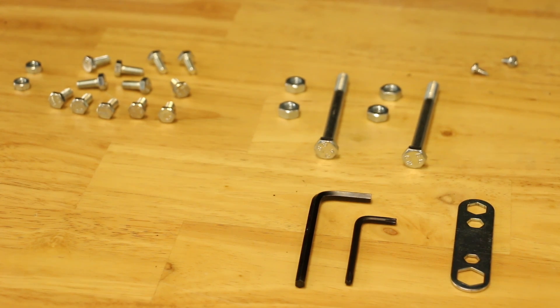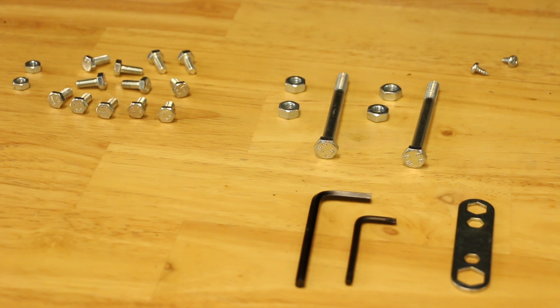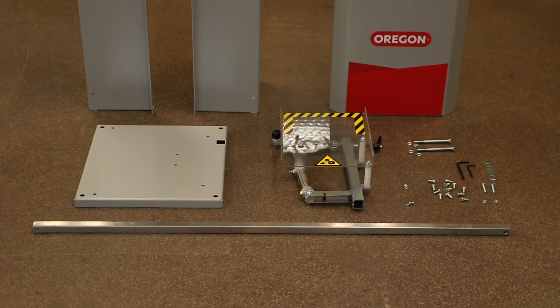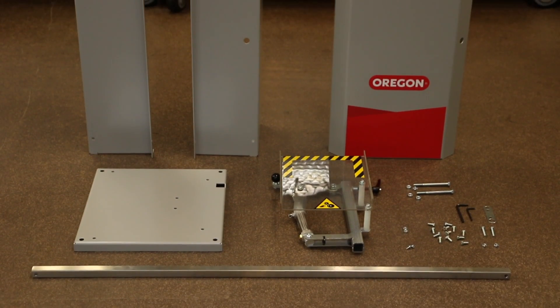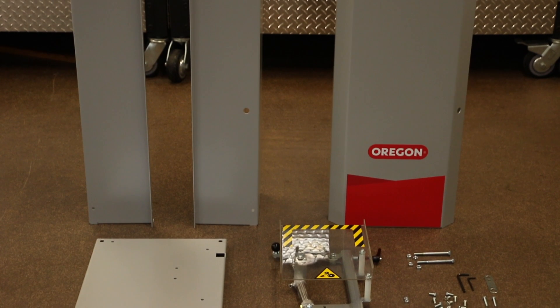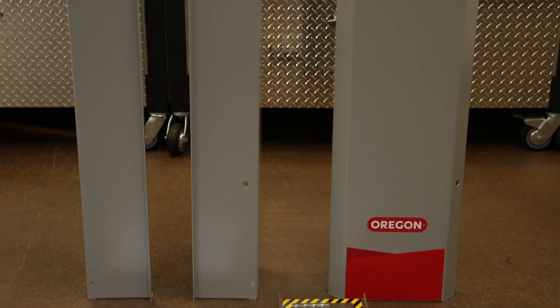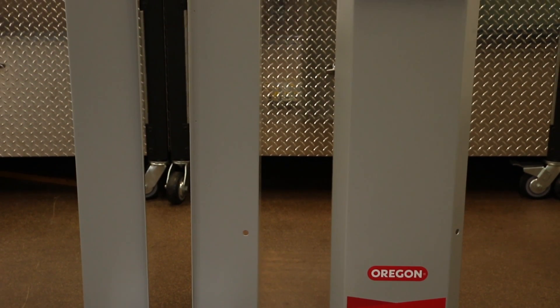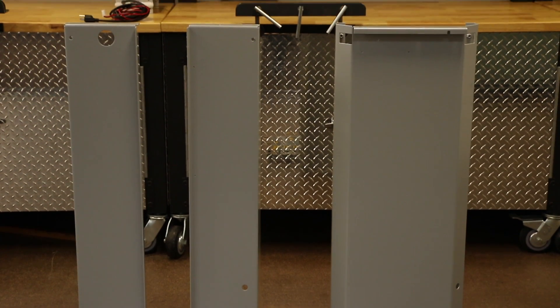The Oregon 700 Series grinders come with the necessary parts and tools for assembly, although you may prefer the convenience of your own tools. Machines can be set up on a bench or the stand that comes included with the 720 and 730. The stand can also be purchased separately for the 710. Please note that mounting hardware for the bench is not supplied.